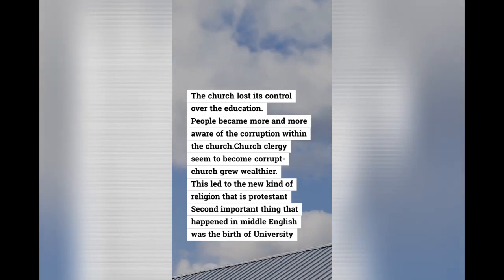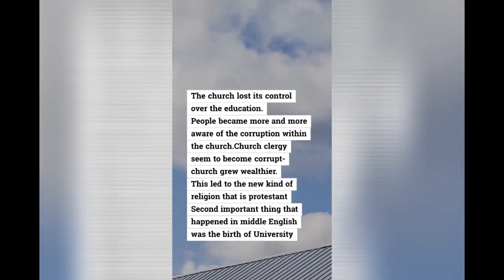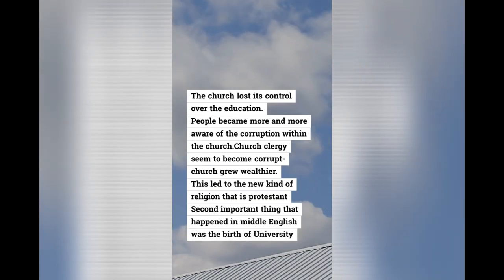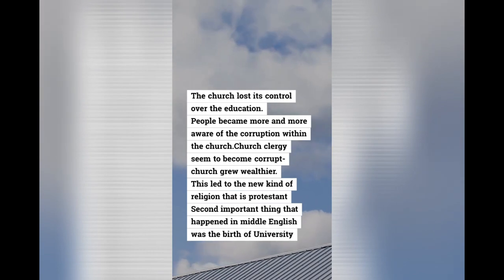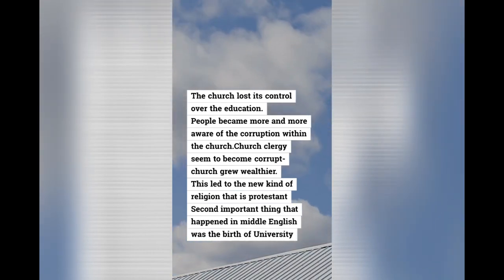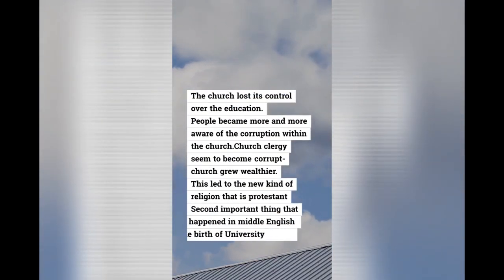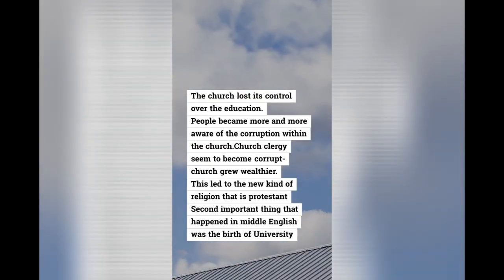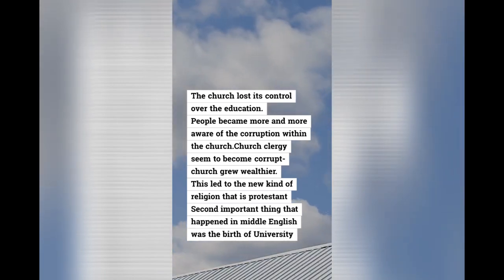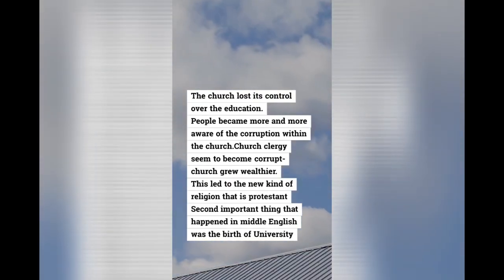While the church lost control over education, people became more and more aware of the corruption within it. This led to a call for reformation against the church, which had so much authority. There was a growing sense of distrust as the clergy seemed to become corrupt while the declared church grew wealthier. Out of this arose a new kind of religion — Protestantism.